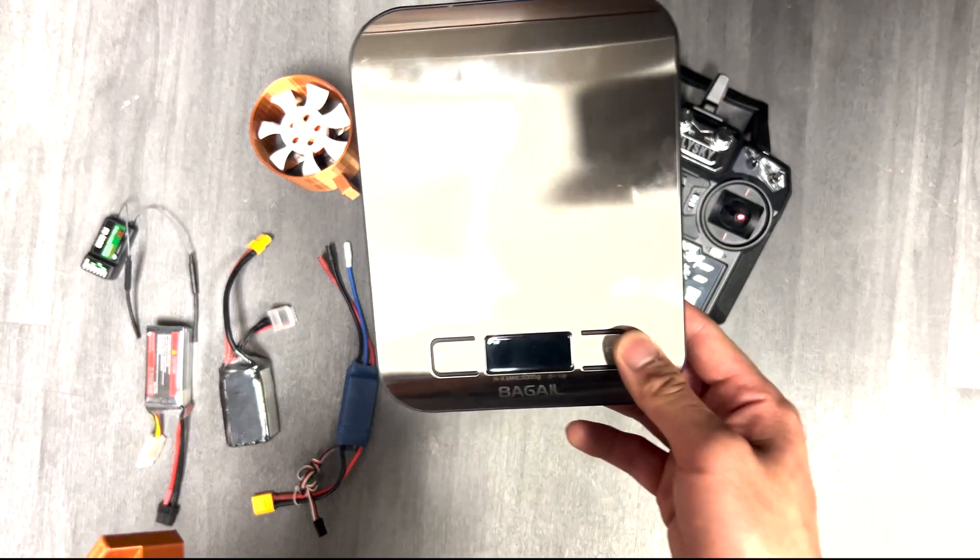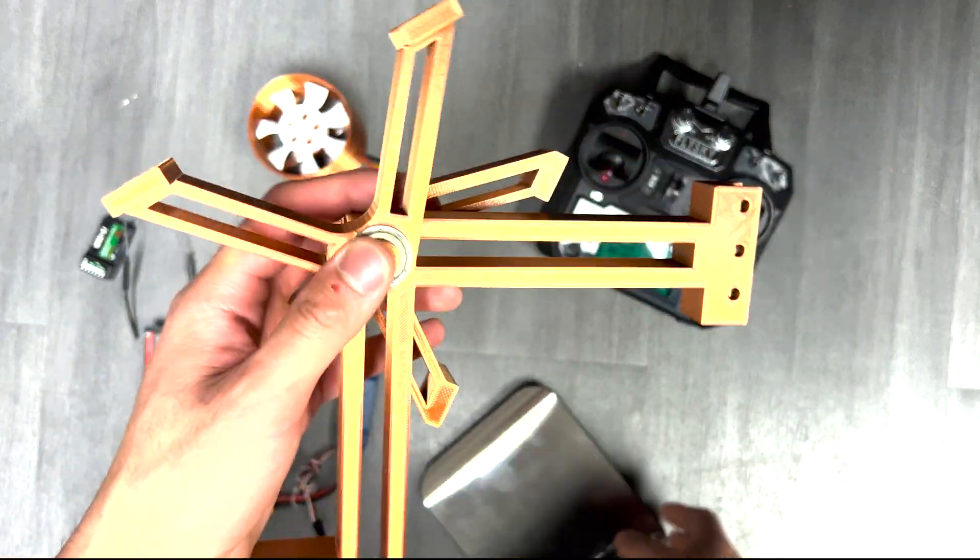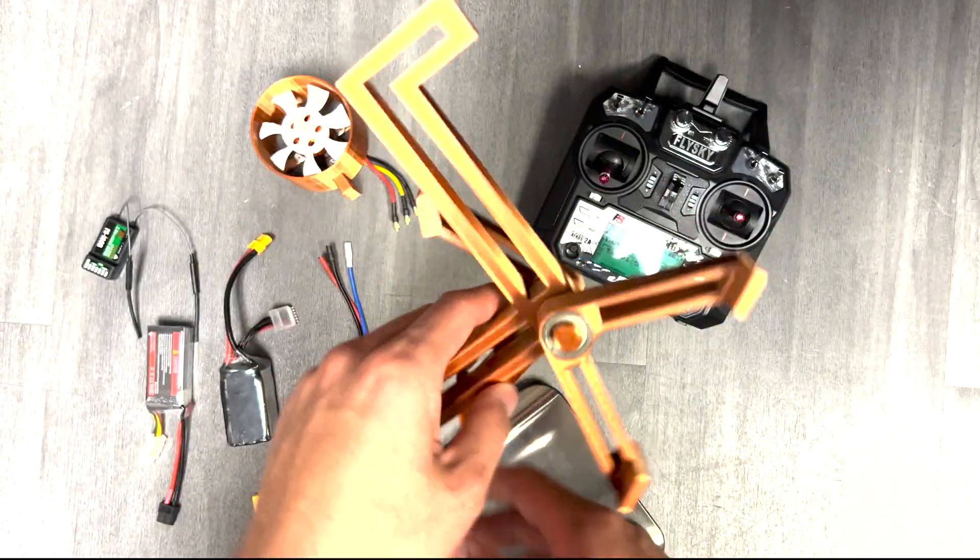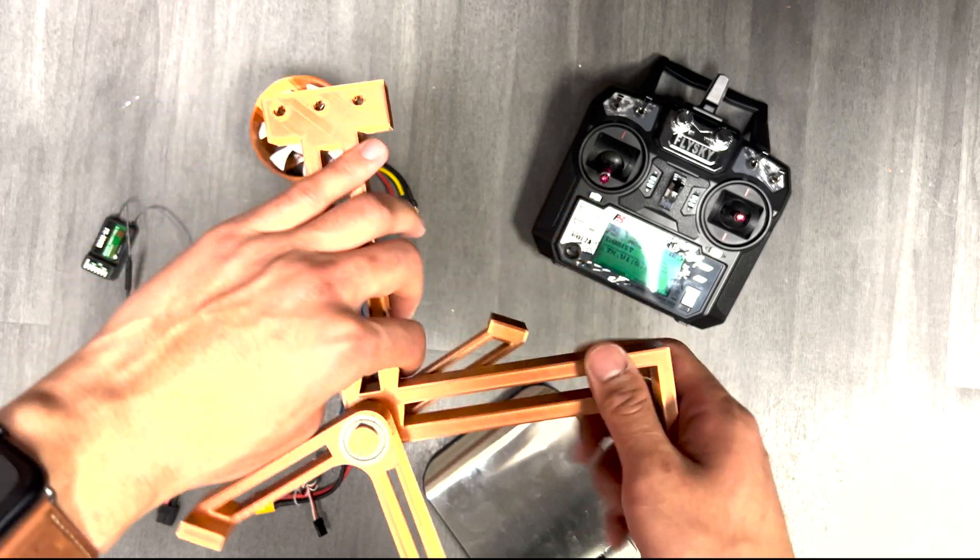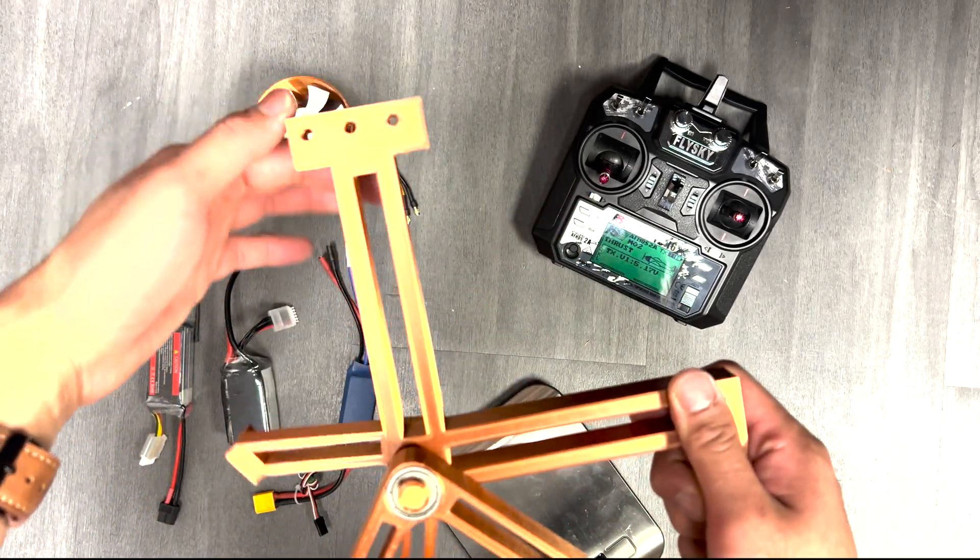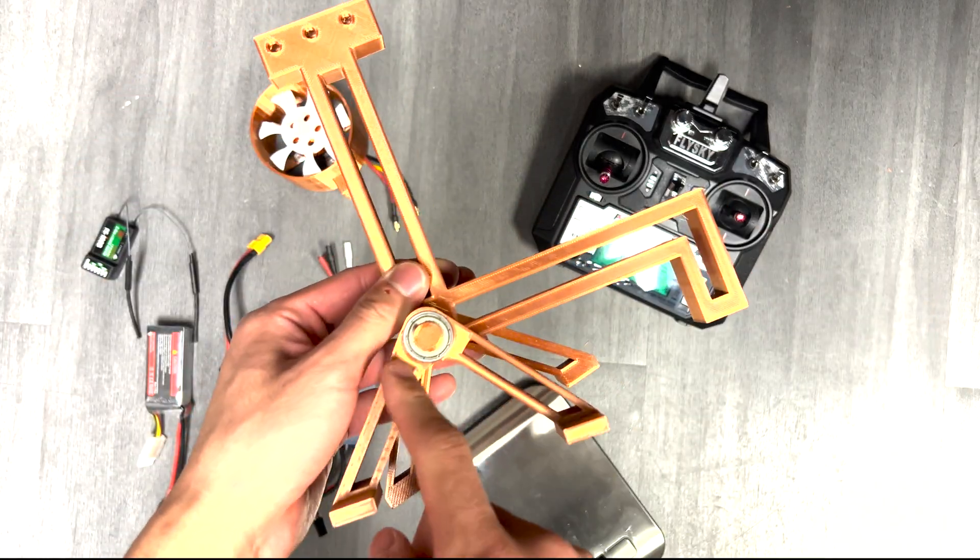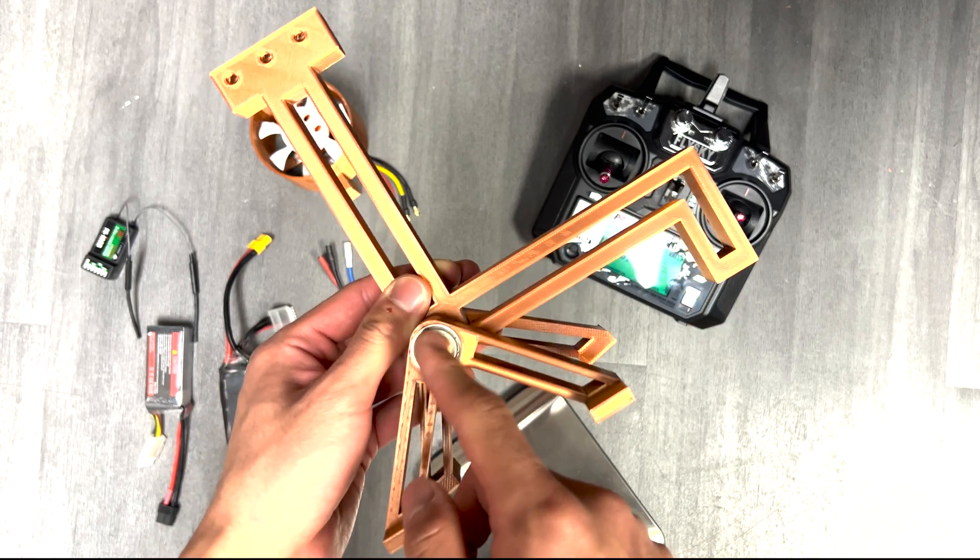For this setup I'm using a very cheap kitchen scale and this lever. The idea is that the point of contact with the scale and the point of applied force from the EDF are equidistant from the axis of rotation in this bearing right here.